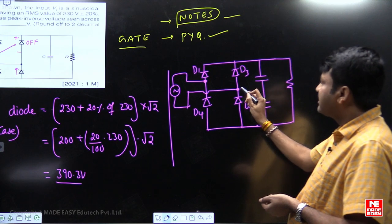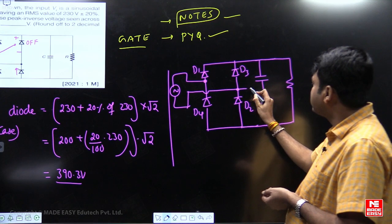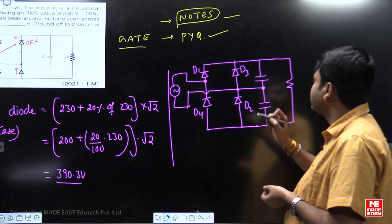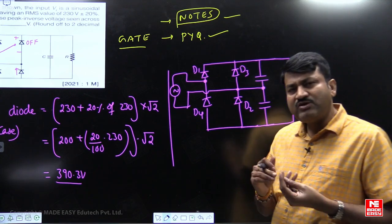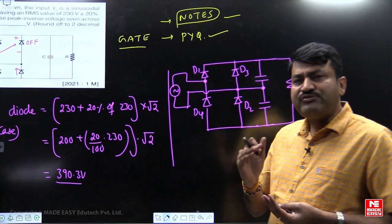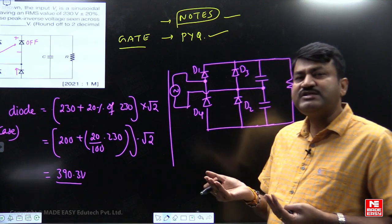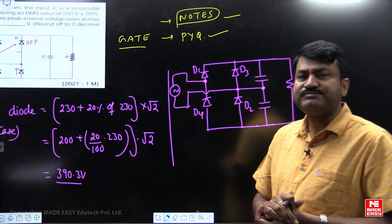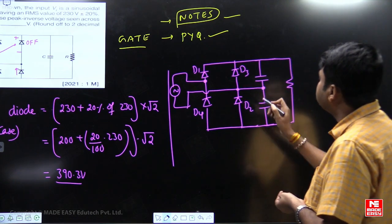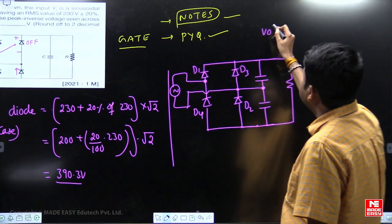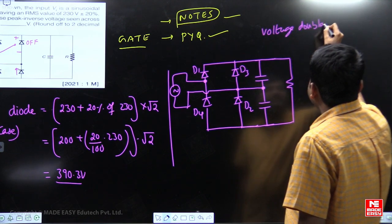Suppose the examiner in the next year wants to do small modifications. What kind of modifications can he do? Suppose these two terminals are shorted. When you observe the previous year questions, in future they may ask other questions related to the same question just by modifying it. Now, if you just short circuit these two terminals, this circuit becomes a voltage doubler circuit.